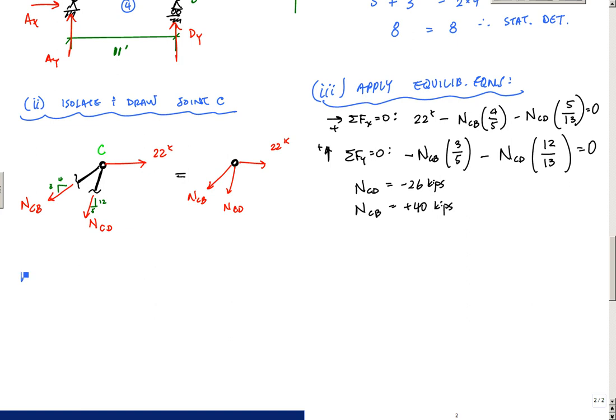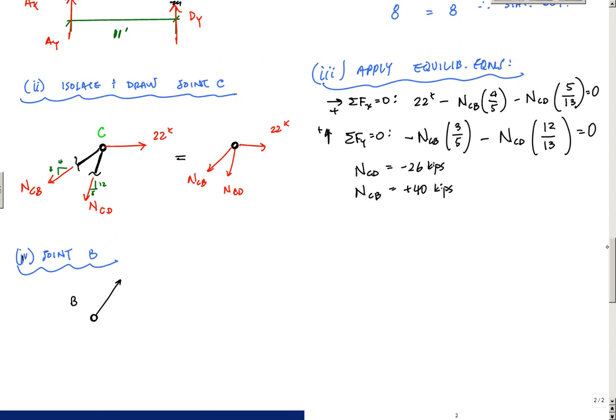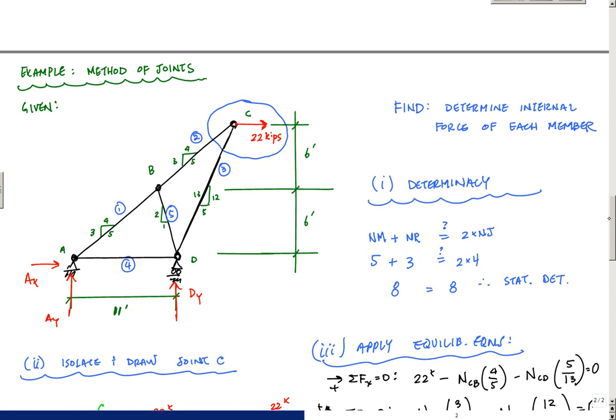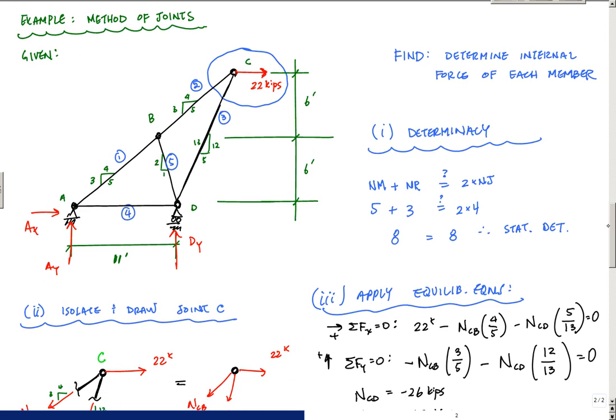For joint B, going joint by joint, here is B and I've got a force right here. I'll call this NBC and NBA. This would be NBC, NBA, and then I've got another one. I've assumed, I've still drawn these in assuming tension, and that's what you always want to do when you draw your schematic, is draw the member forces assuming tension.